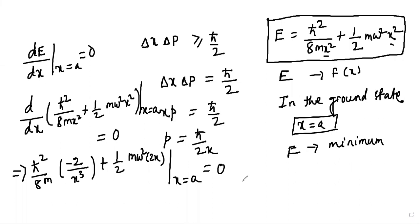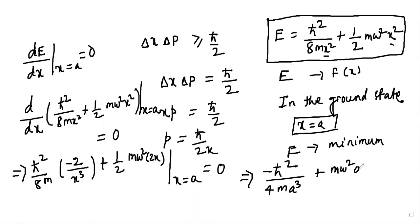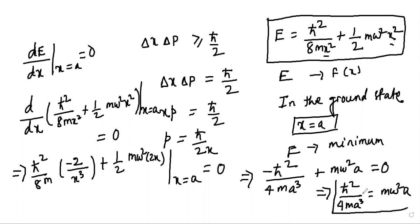Simplifying — cancelling the 2 with the 8 and the 2 in the second term — we get −ℏ²/(4ma³) + mω²a = 0. Rearranging, this gives ℏ²/(4ma³) = mω²a.